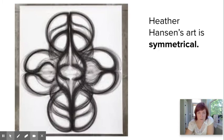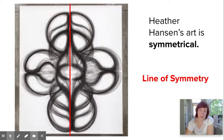So this is a picture of Heather Hansen's art and it is symmetrical. We know this because we can draw a line of symmetry down the middle and it will be the same on one side as the other.